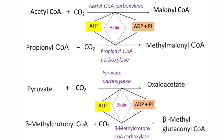The first example of biotin-dependent carboxylation is the conversion of acetyl-CoA to malonyl-CoA, catalyzed by the enzyme acetyl-CoA carboxylase. The importance of this reaction is that the starting material for de novo fatty acid synthesis is acetyl-CoA, and in the first reaction of de novo fatty acid synthesis, it is converted into malonyl-CoA by this particular enzyme.